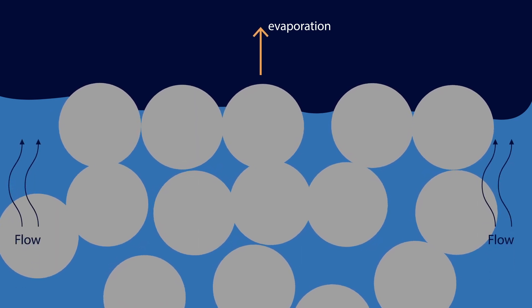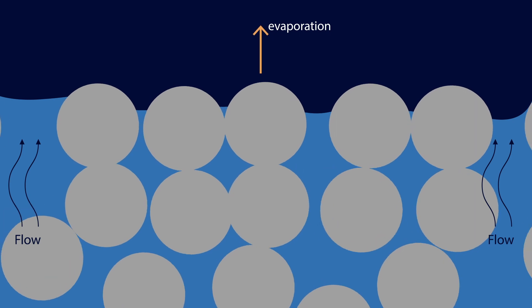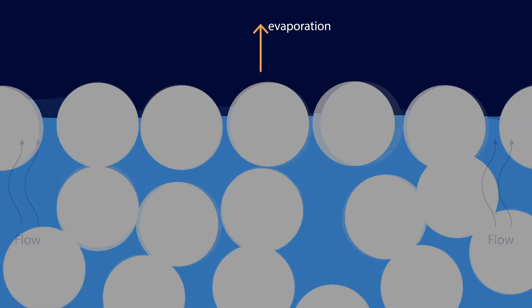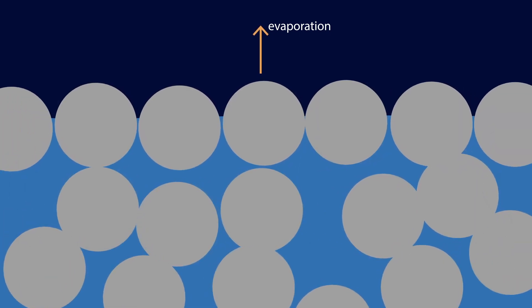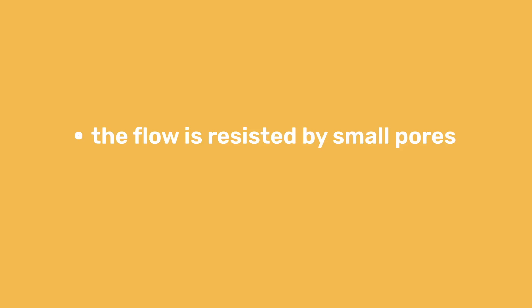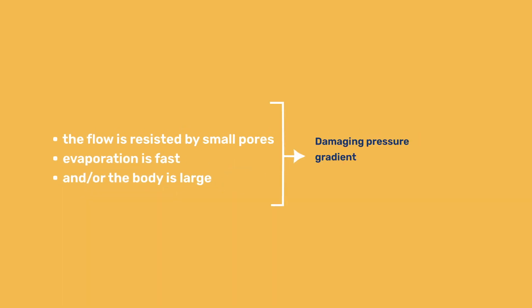If flow inside the body is fast compared to the rate of evaporation, then the pore pressure remains nearly uniform and the stress is low. However, if the flow is resisted by small pores, evaporation is fast, and or the body is large, then a damaging pressure gradient may develop.